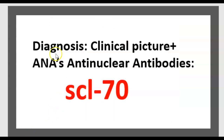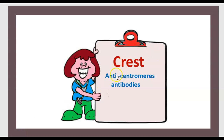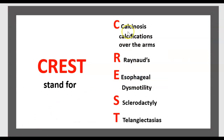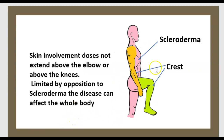Let's review. Diagnosis of scleroderma is clinical picture plus ANA anti-nuclear antibody SCL-70. For CREST syndrome, it's anti-centromere antibody. CREST stands for calcinosis, Raynaud, esophageal dysmotility, sclerodactyly, and telangiectasia. To make the difference between scleroderma and CREST: skin involvement does not extend above the elbow or above the knee in CREST syndrome — it is limited. By opposition, in scleroderma the disease can affect the whole body.